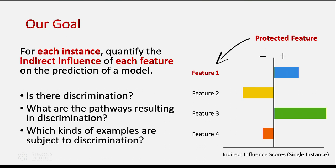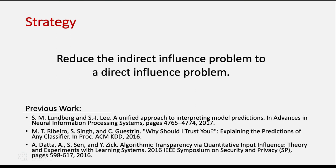This can be a computationally difficult problem because it involves understanding the relationships between different variables. If we're trying to understand whether a decision is being influenced via proxy, we first have to understand what the proxies are and all these higher-order relationships. What we'd like to do is reduce this difficult indirect influence problem to a simpler direct influence problem, because there's other work done in that area. If we can leverage their work and translate our problem into their problem, our problem gets easier.